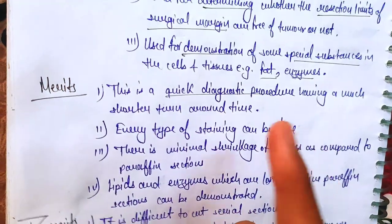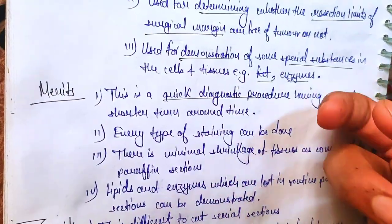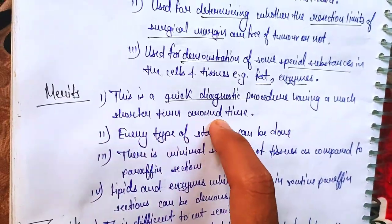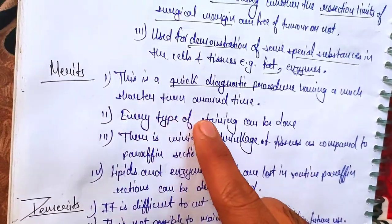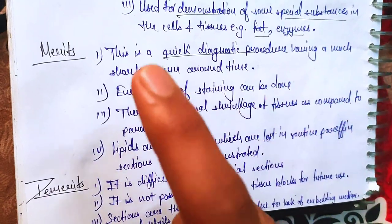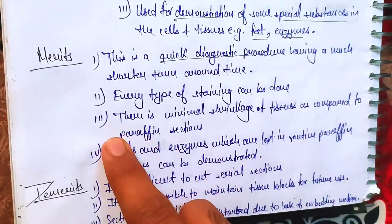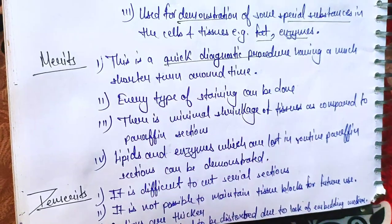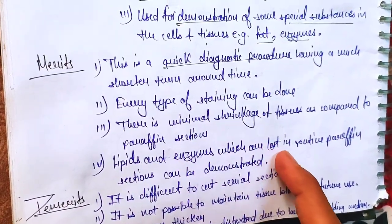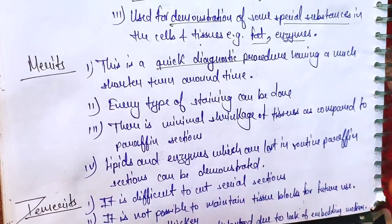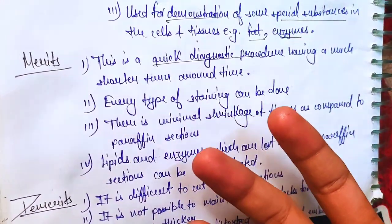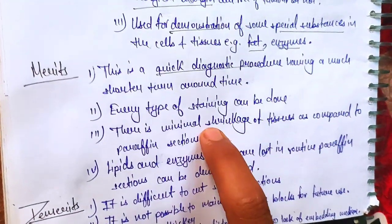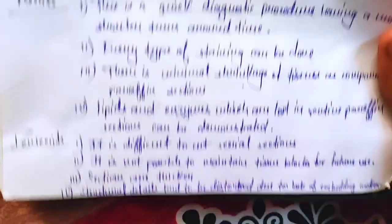What are the merits of frozen section? It is a quick diagnostic procedure — we can quickly determine whether there is cancer or not. It has a much shorter turnaround time. Every type of staining can be performed. There is minimal shrinkage of tissue as compared to paraffin sections. Also, lipids and enzymes which are lost in routine paraffin sections can be demonstrated here.